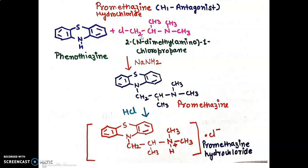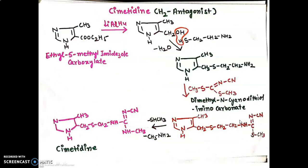These two constituents react together in the presence of a strong base like sodium hydroxide, so that the hydrogen of the phenothiazine ring gets replaced with the alkyl side chain. This way we obtain promethazine, which is further treated with dilute hydrochloric acid to give promethazine hydrochloride.